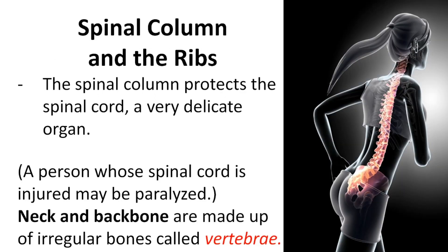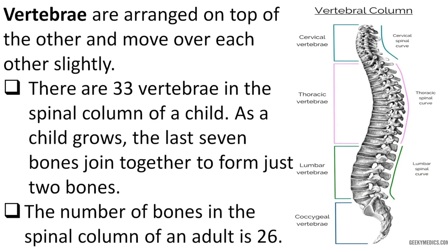The spinal column protects the spinal cord, a very delicate organ. A person whose spinal cord is injured may be paralyzed, because the spinal cord inside the spinal column is the extension of the brain to the extremities of the body. The neck and backbone are made up of irregular bones called vertebrae, arranged on top of one another. There are 33 vertebrae in the spinal column of a child, but as a child grows, the last seven bones join together to form just two bones, leaving 26 bones in an adult's spinal column.